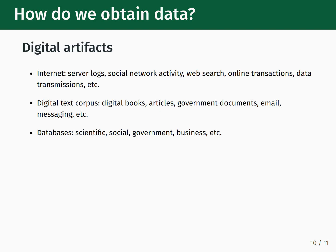The last class of data categories we will discuss are digital artifacts — data that are generated in a digital format first. This can include data from the internet such as server logs, activity on social networks, web search results, online transactions, and data transmission logs. Digital artifacts can also correspond to a corpus of digital texts, including digital books, articles, government documents, email, and messages. Finally, we have databases, which can serve and contain information from several different fields including scientific databases, social databases, government databases, and databases used by business.